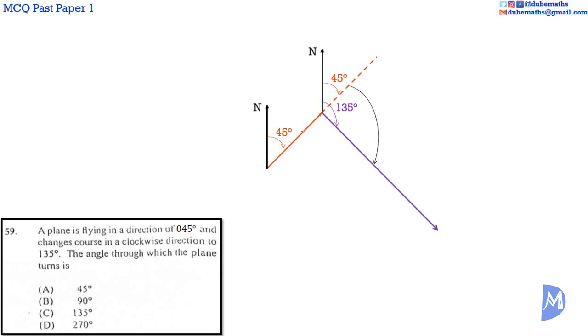The direction the plane was initially traveling. The entire angle is 135 degrees. So, the angle through which the plane turns is 135 degrees, subtract 45 degrees, which is equal to 90 degrees. The answer is B.